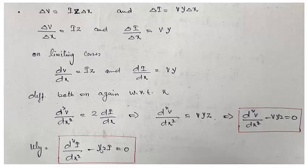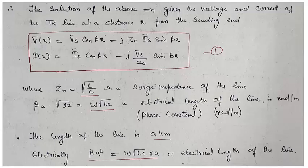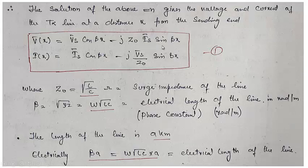You can calculate this and find the complementary function. There will be no particular integral of these equations, and then applying boundary conditions you can get the values. I will not go into these mathematical details as I have shown this in Power Systems I. Writing the solution directly: V(x) equals Vs·cos(β·x) minus j·Z₀·Is·sin(β·x), and I(x) equals Is·cos(β·x) minus j·(Vs/Z₀)·sin(β·x). Vs and Is are the boundary condition values at the sending end.